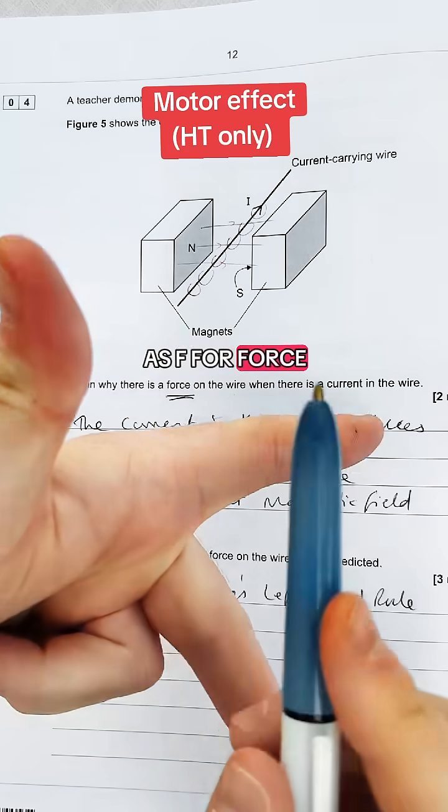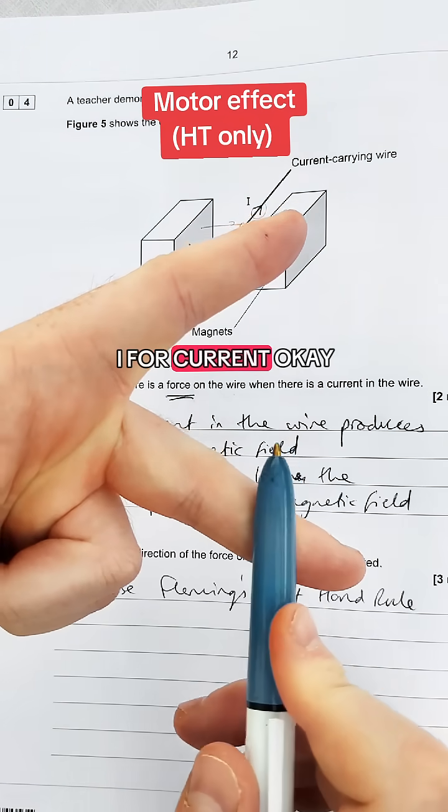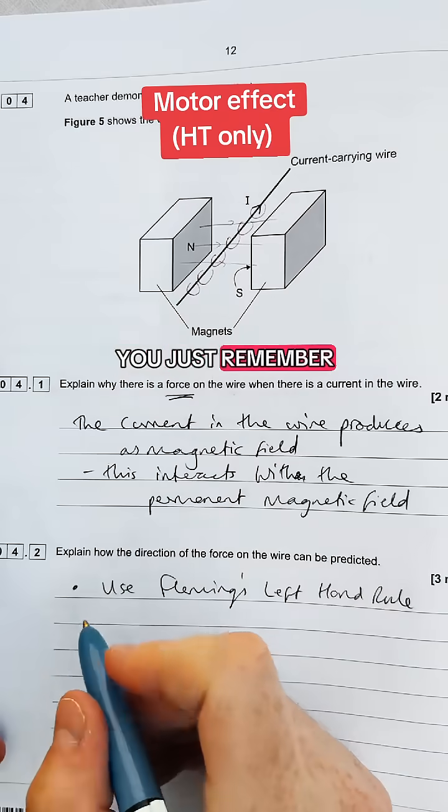Some people remember it as F for force, B for magnetic flux density or field and I for current. Whichever way you want to remember it you've just got to remember which way around they are.